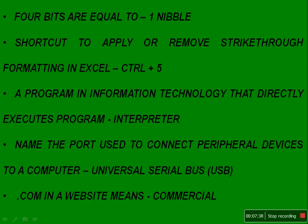Regarding domain extensions: dot com means commercial. Dot US means it is the country code for America (United States). Dot IN means India. Dot EDU means educational. In this question they asked about dot com, so it means commercial.